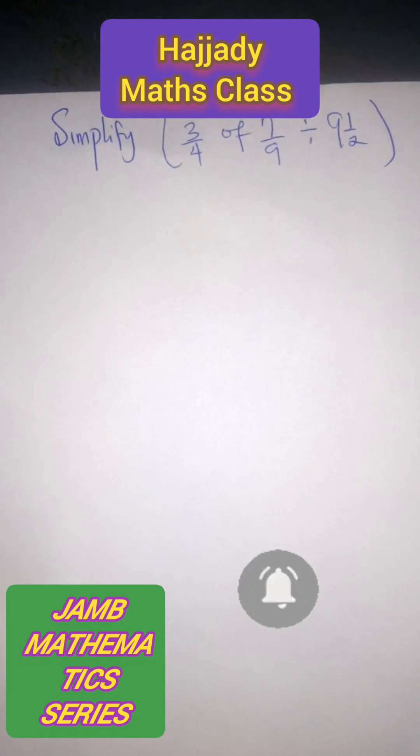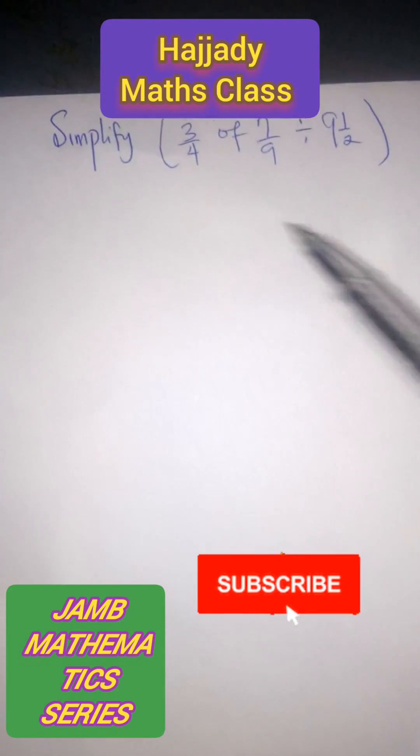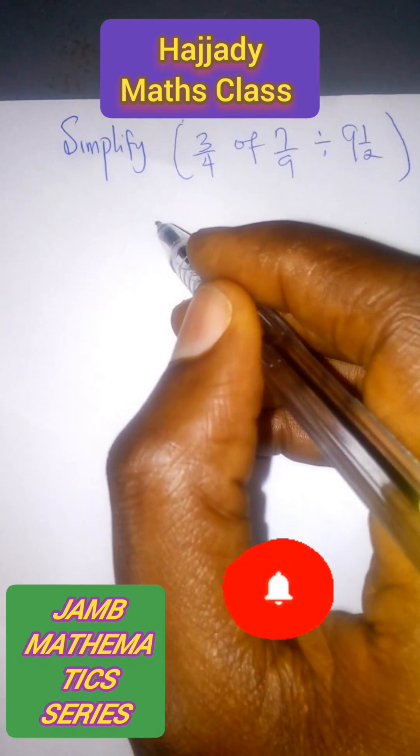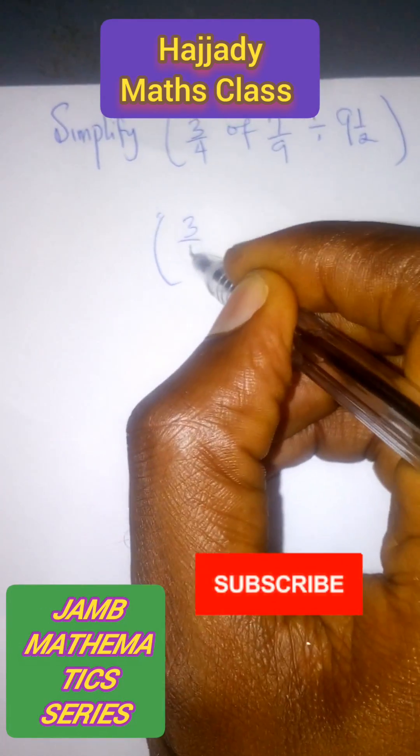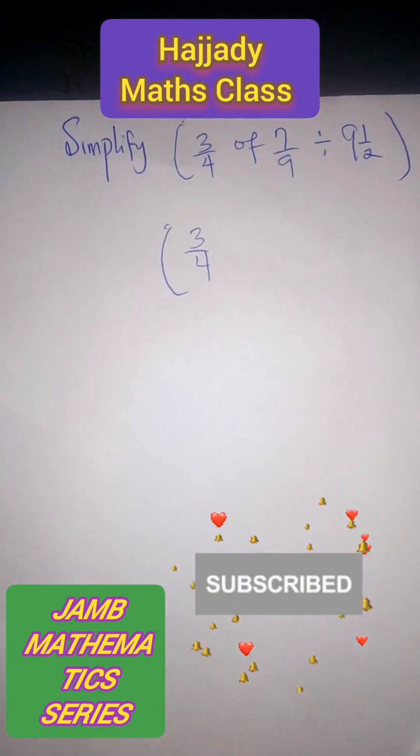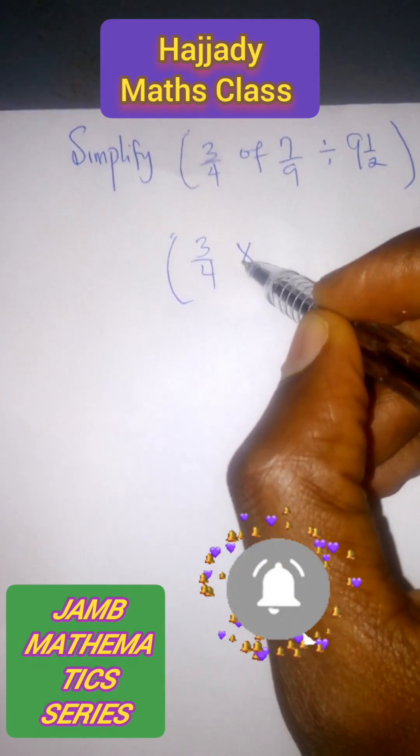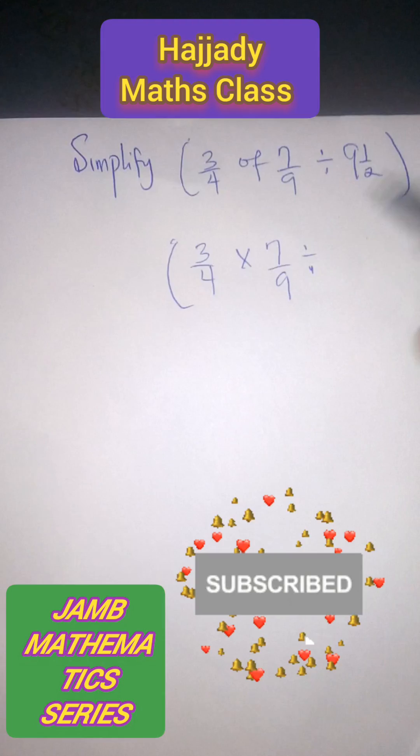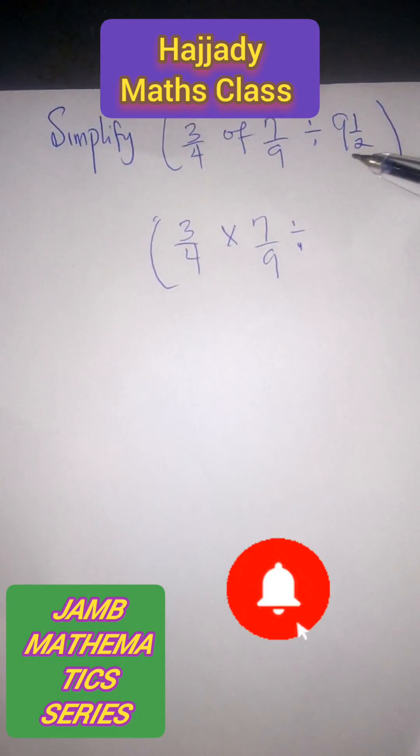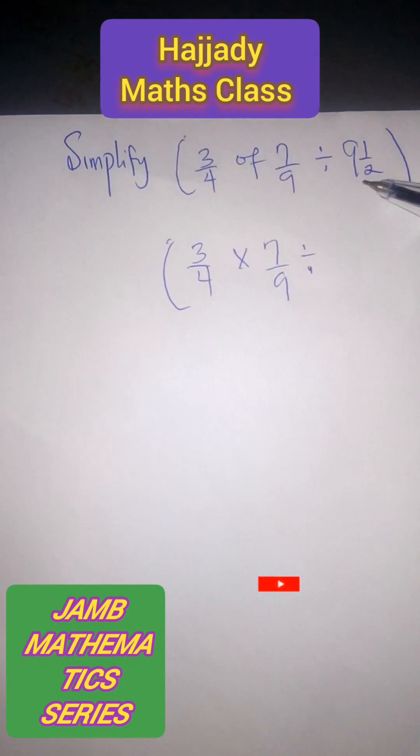In this case we are making use of the BODMAS approach in which we are solving the bracket first. So here we have 3 over 4. The 'of' sign here is the same thing as multiplication, which is 7 over 9 divided by changing this mixed fraction to improper fraction.